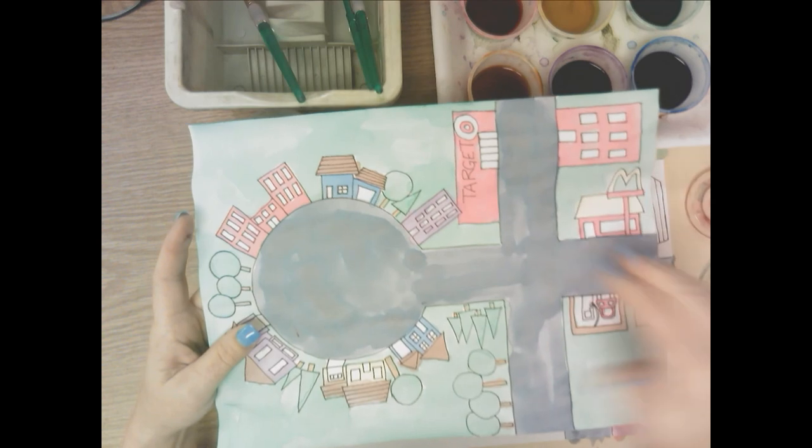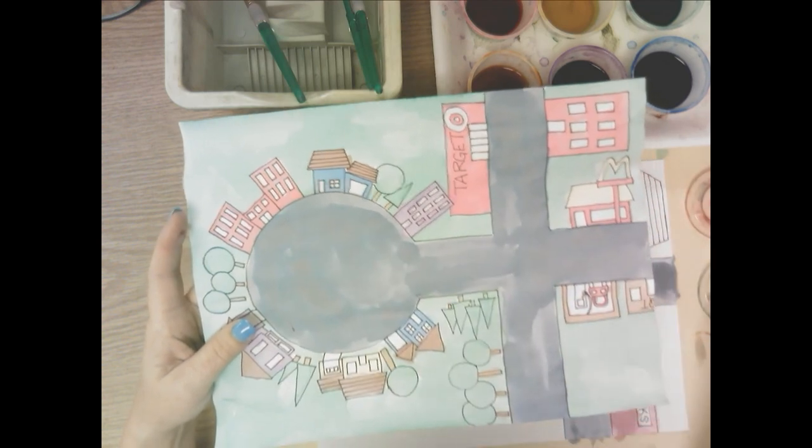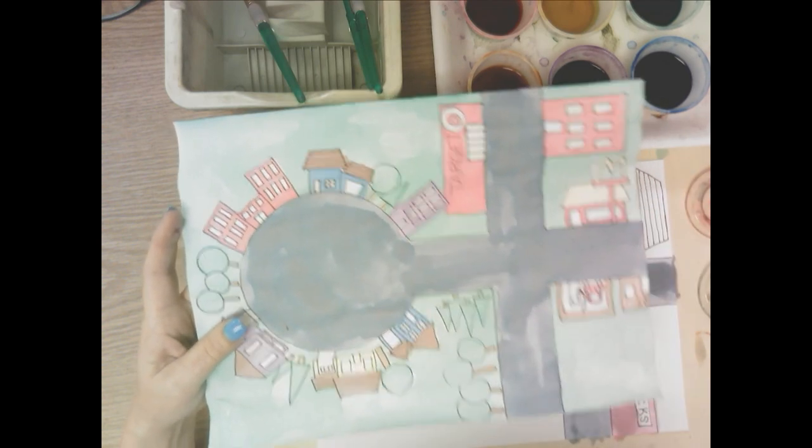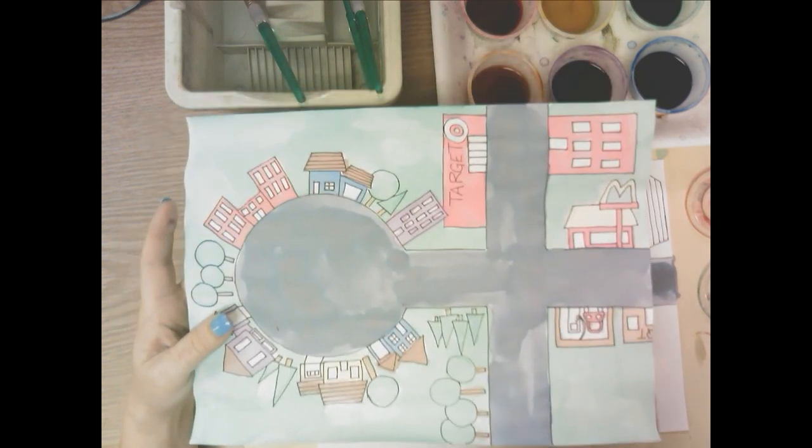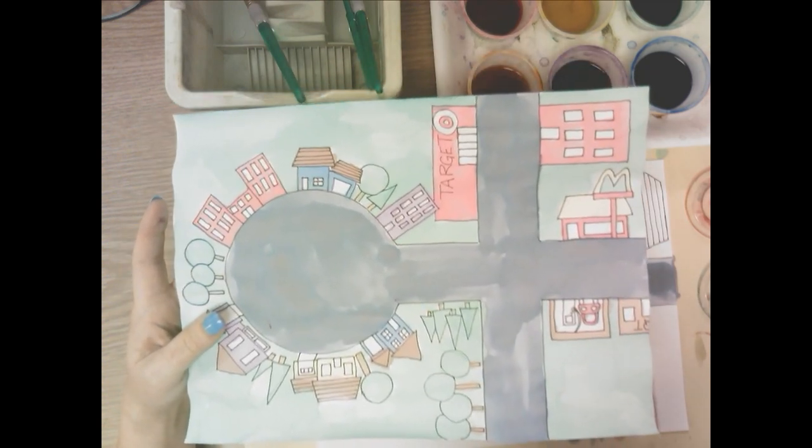So I'd like you to take your time and paint until your whole paper is painted. Maybe if you choose to leave the windows white or part of something white, you can, but most of your paper should be painted. And that's what your finished collaborative city is going to look like when you add color.